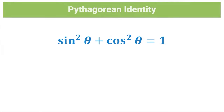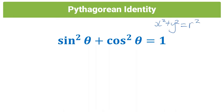So first let's start with the Pythagorean identity. From the name you can see we're going to have a link to the Pythagorean theorem. The Pythagorean theorem is x² + y² = r², in terms of trigonometry. The Pythagorean identity states that sin²θ + cos²θ = 1.